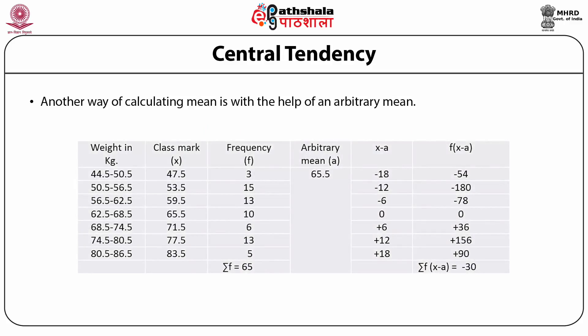As shown in the table, the age of 15 boys is given and we can find the mean age. From the table, the frequencies are summed with the number of observations (n = 15), and the mean comes out to be 12.26. Another way of calculating the mean is with the help of an arbitrary mean: take an arbitrary mean, find the difference of each value from the arbitrary mean, multiply the difference with the frequency of the corresponding class interval, find the sum of these products, divide by the total number of observations, and finally add the arbitrary mean to the result.